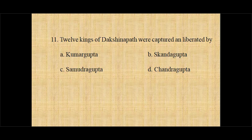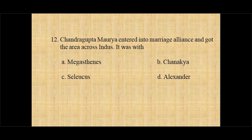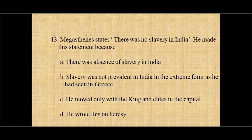Question number twelve: The treaty giving Chandragupta Maurya the area across the Indus was with — option A Megasthenes, option B Chanakya, option C Seleucus, option D Alexander. And the correct answer is option C, Seleucus.